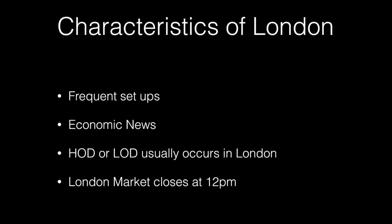By frequent setups, I mean you can stumble across a strong directional move — let's say you're on a support level at 2:30 a.m. and you get a strong directional move from a specific key level, a pullback, or a swing point failure. We'll talk about that more in the price action theories series. You'll also see economic news releases in both London and New York. Most importantly, write this down: the high of the day or low of the day usually occurs in London.